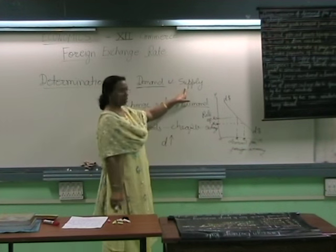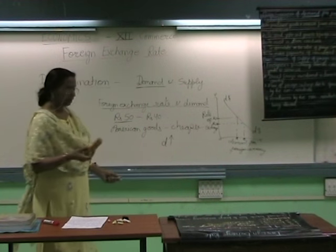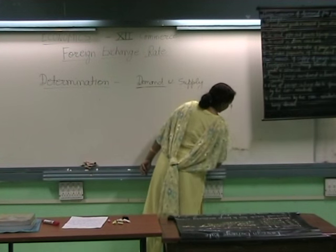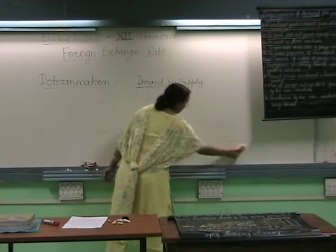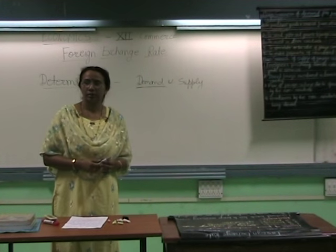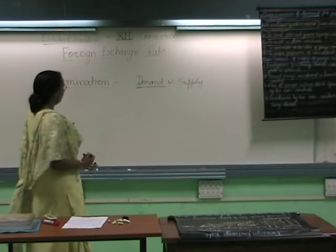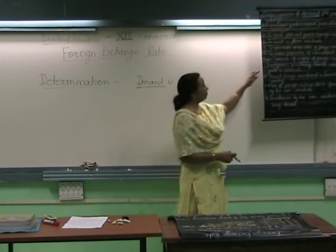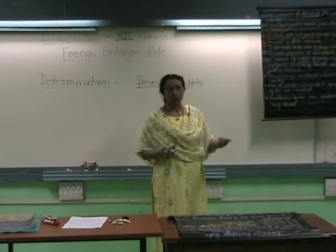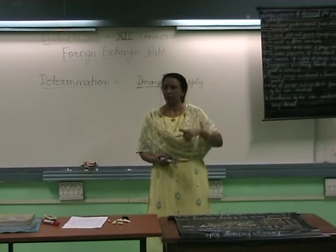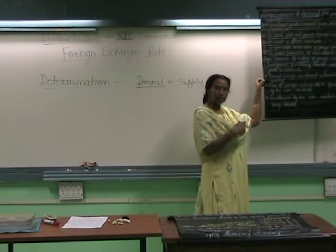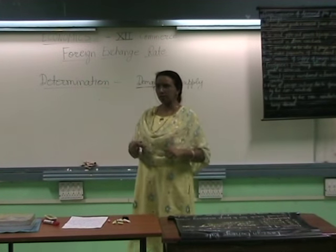Now we will come to the supply side. How do we get foreign exchange? The sources are just the opposite of demand. When we import, we demand foreign exchange. When we export, we get foreign currency. So for the supply of foreign exchange: when foreigners purchase our goods and services, we get foreign currency — that is, by exports. The second source: when foreigners invest in our country — for example, Americans investing in India bring dollars here and exchange them.